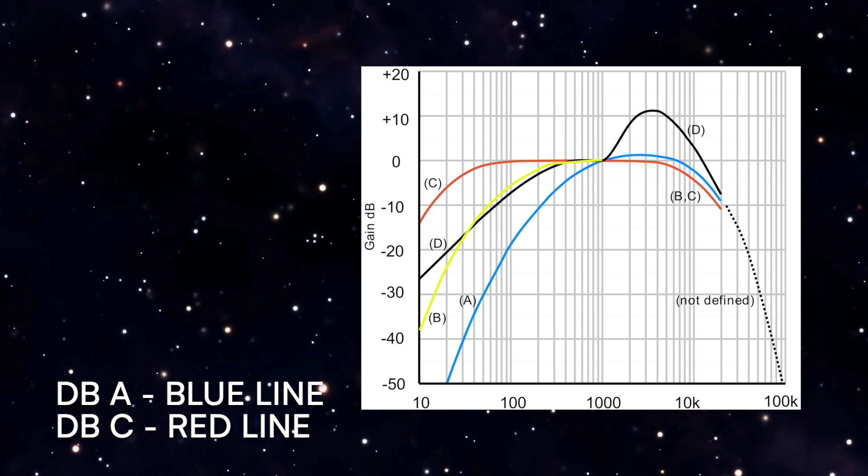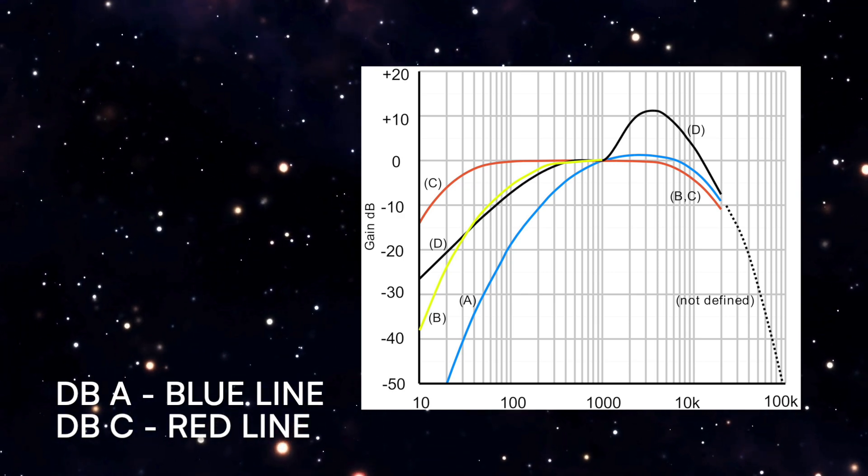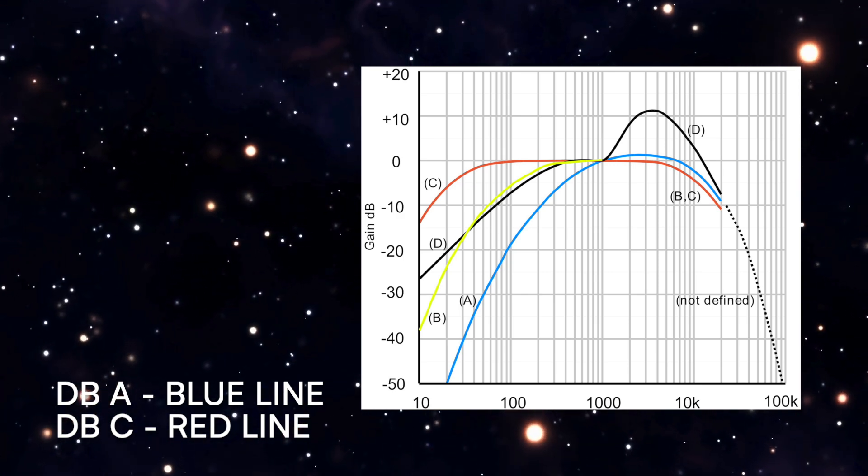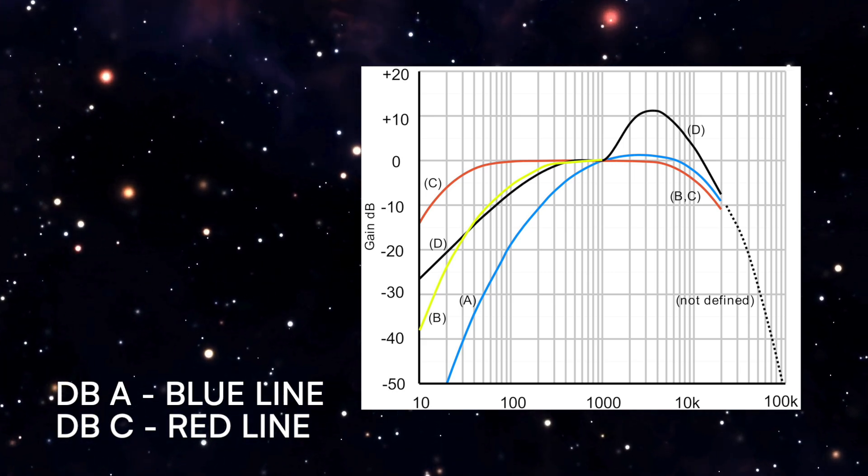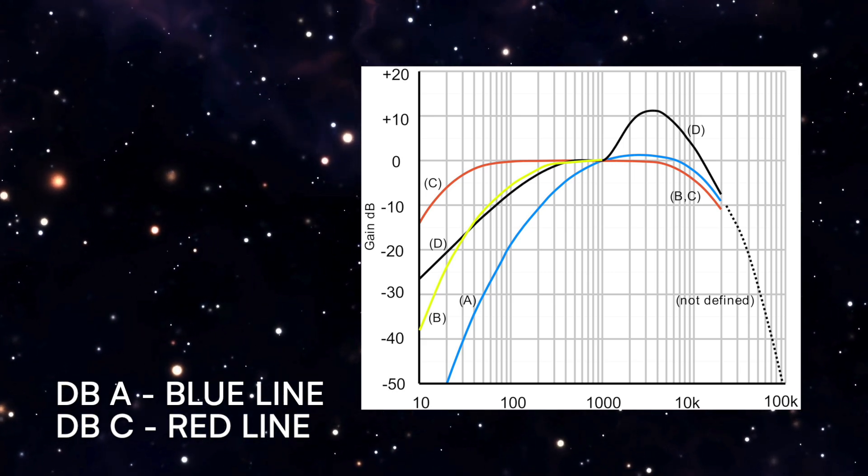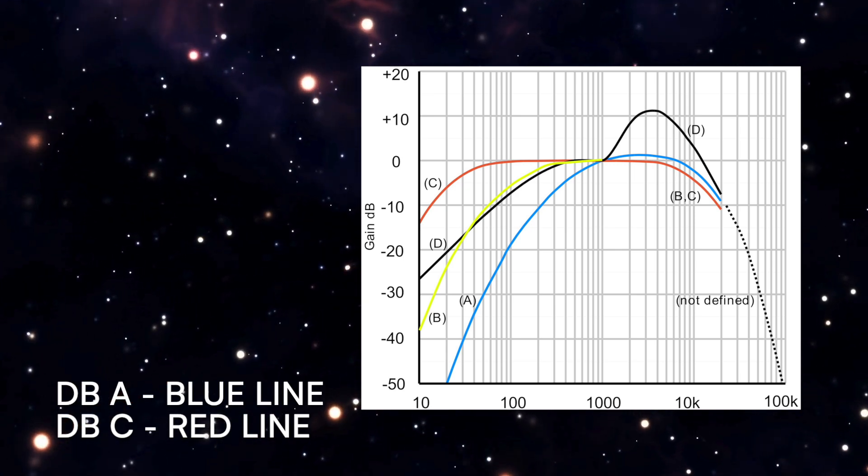Above 6000 Hz, the curve drops again, leading to attenuation. The C-weighting curve shows that frequencies from 200 Hz to 1250 Hz are unaffected—neither attenuated nor amplified. Attenuation for frequencies below 200 Hz is much less compared to the A-filter.